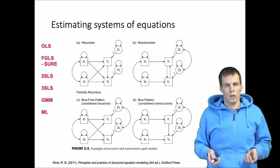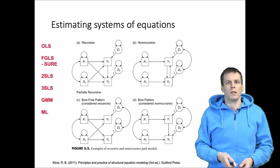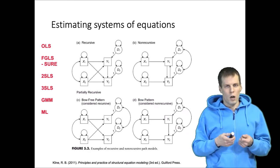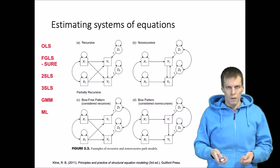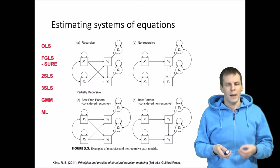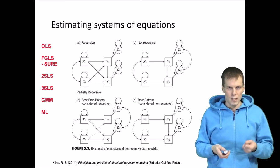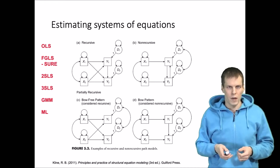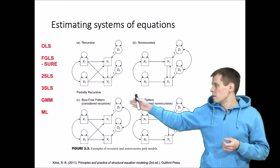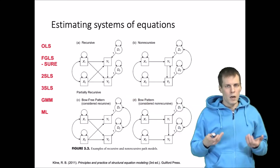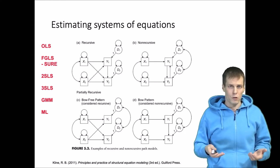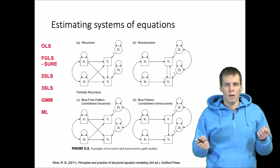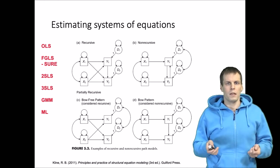We could also use maximum likelihood estimation. It adds more assumptions to GMM but allows you to model certain things you cannot model with GMM. For example, some models are not identified if you try to estimate with GMM, but they can be estimated with ML because you can add additional constraints to identify them that are not available in GMM. As a downside, maximum likelihood adds assumptions about distributions, but you gain some efficiency. There are trade-offs between different estimation techniques.